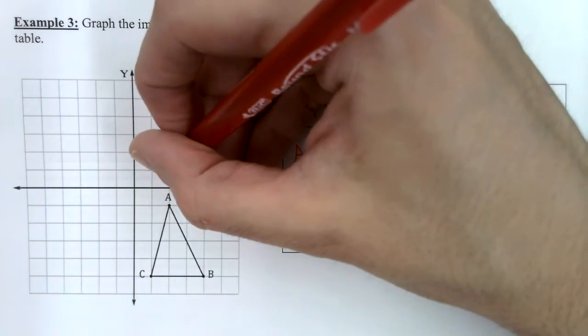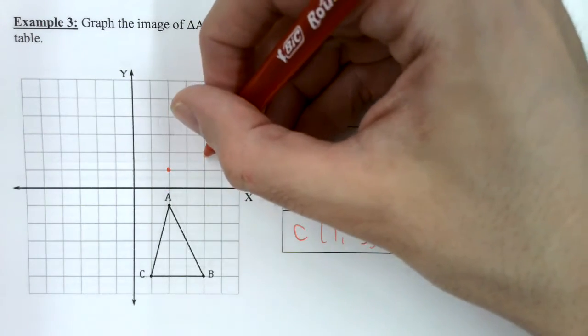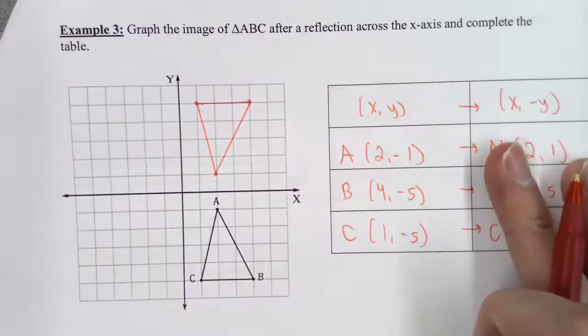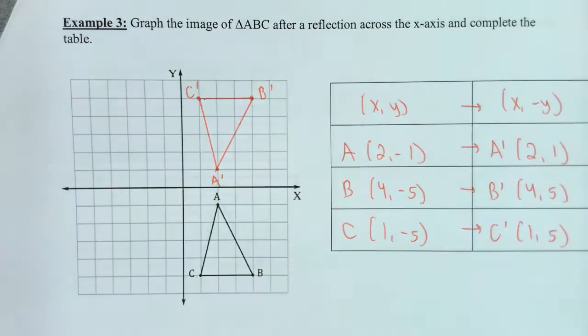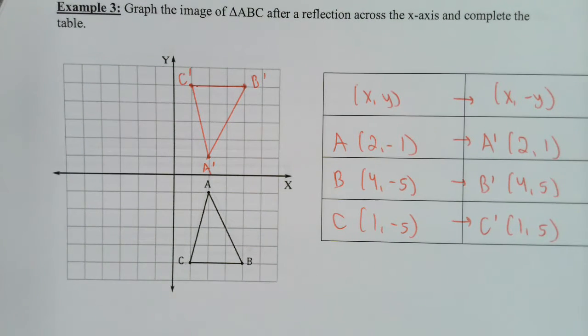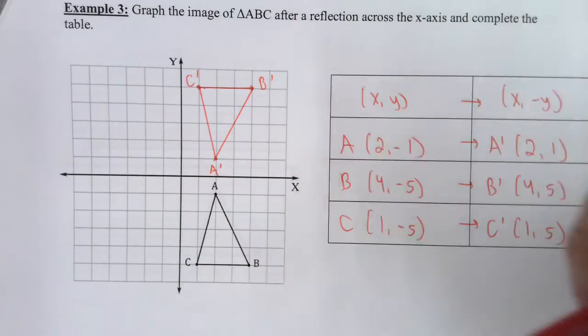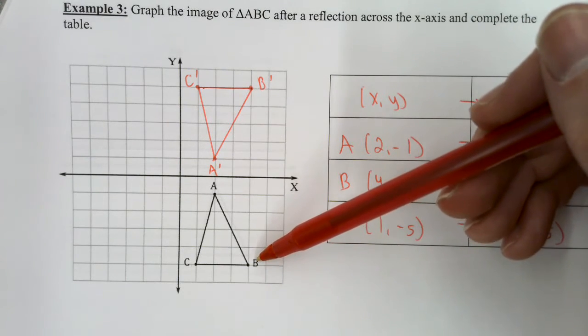Graphing the image: plot (2, 1), (4, 5), and (1, 5), connect the vertices and label. These are all rigid motions so the pre-image and image should be the same shape and size. A is one unit below the x-axis so A prime is one above; C and B are five below so C prime and B prime are five above.